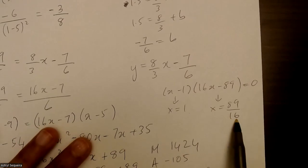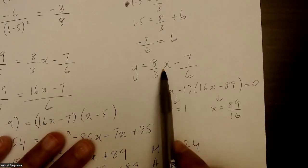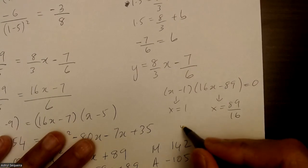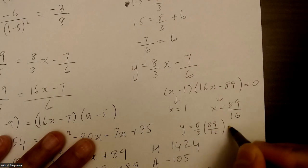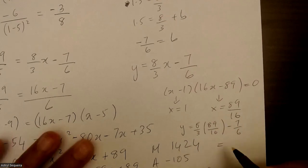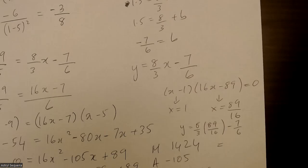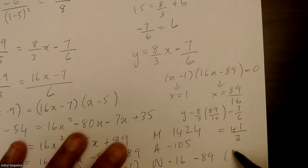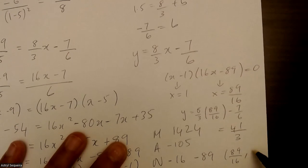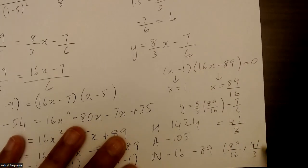All you have to do now is sub this into this equation here to find the y value. So I'll squeeze it in here. y equals to 8 over 3 times 89 over 16 minus 7 over 6. And I'll put that in my calculator. So I get 41 over 3. So basically the other point of intersection is 89 over 16 comma 41 over 3.